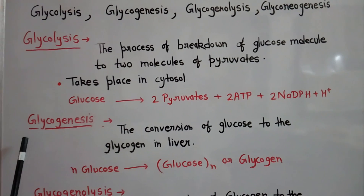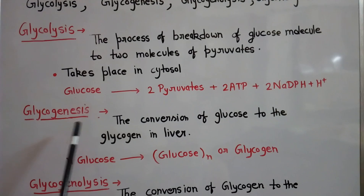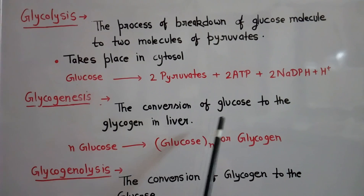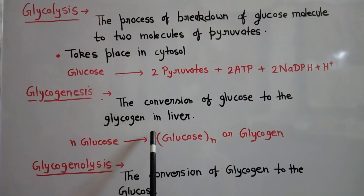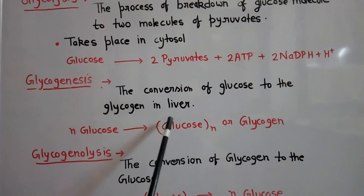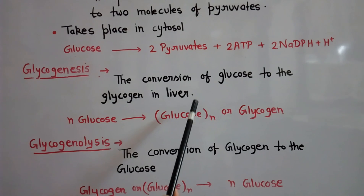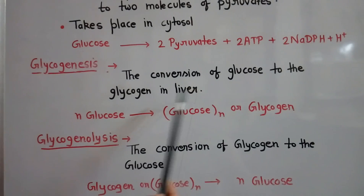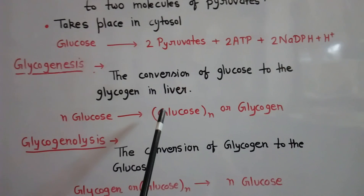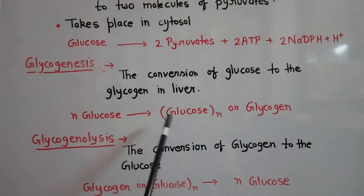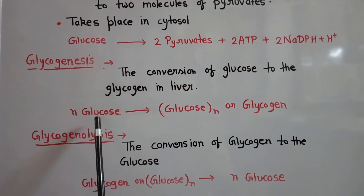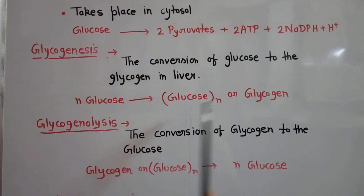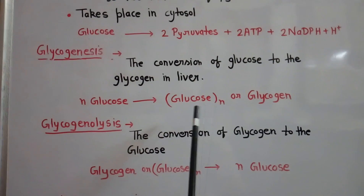The second process is glycogenesis. Glycogenesis means synthesis of glycogen — the conversion of glucose to glycogen. This process takes place in the liver when there is excess glucose in the blood. Glycogen is the polymer of glucose, so the conversion of glucose molecules to a glycogen molecule is called glycogenesis.